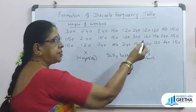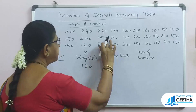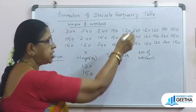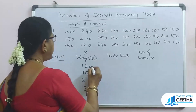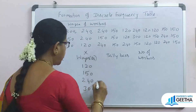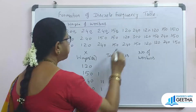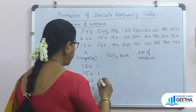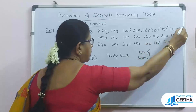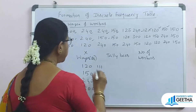So we are going to form a discrete frequency table with the help of tally bars. The data values are: 150, 120, 240, again 120, 120, 150, 150, 250, 240, 150. When placing the 5th tally, we must cross it.